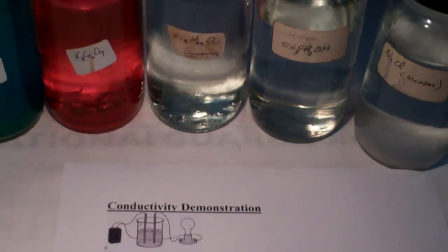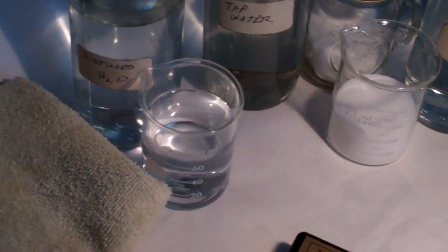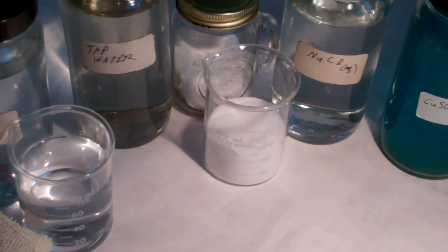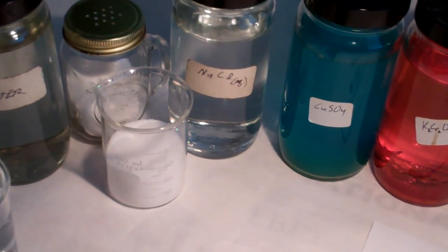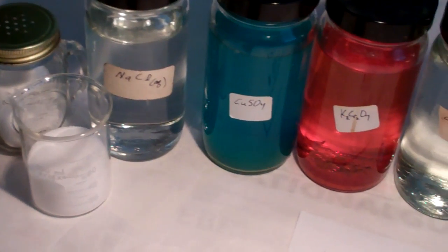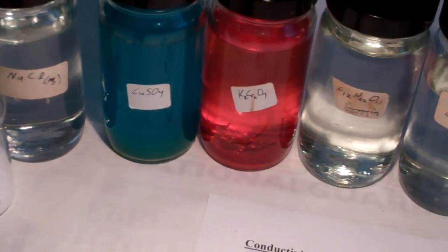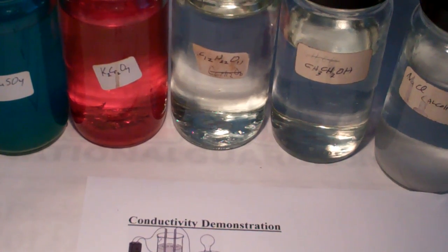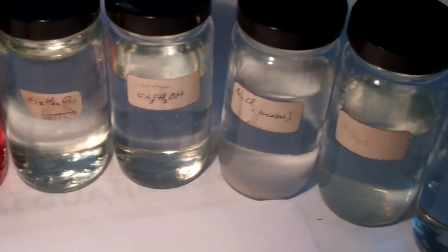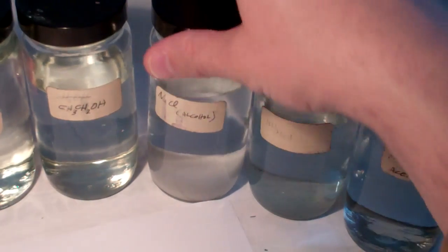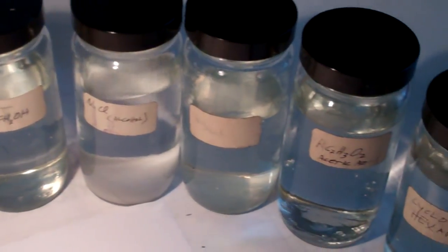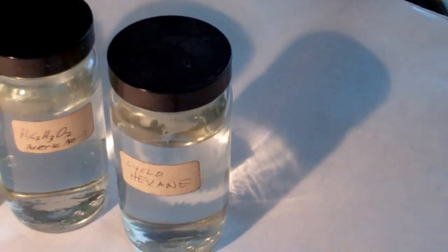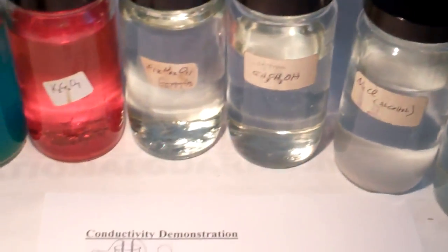So the solutions we're going to use today, or liquids or solids, will be distilled water, tap water, table salt, sodium chloride dissolved in water, copper sulfate dissolved in water, potassium dichromate dissolved in water, sugar dissolved in water. We have some ethanol, then sodium chloride and alcohol, ammonia, acetic acid, and then finally cyclohexane.